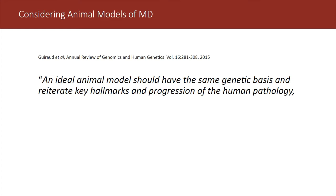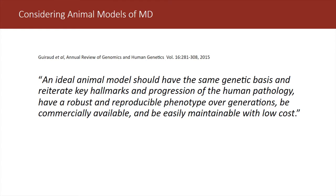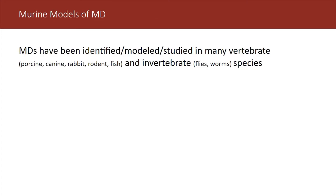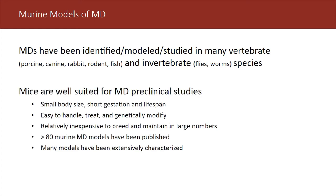An ideal model should reiterate key hallmarks and progression of the human pathology and have a robust and reproducible phenotype over generations. It should also be commercially available and widely accessible to most investigators, readily maintainable with fairly low cost. There are many models of the muscular dystrophies identified in many vertebrate species as well as invertebrates. Today we're talking about murine models or mice. Mice are very well suited for muscular dystrophy preclinical studies due to their small body size, short gestation lifespan, allowing relatively easy husbandry.